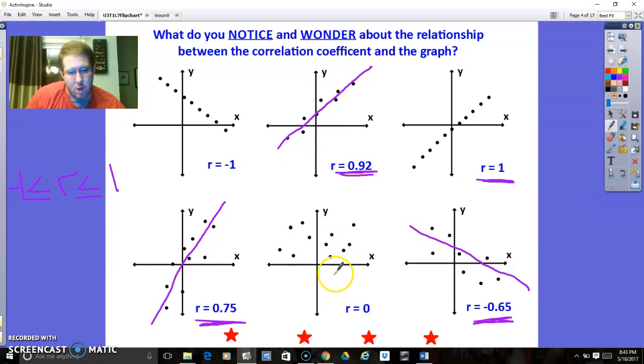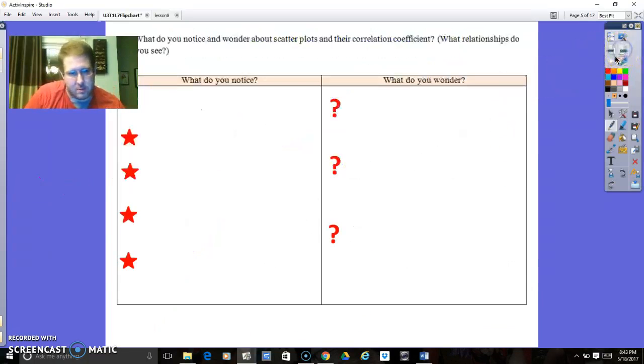That just matters from the correlation coefficient because it tells you the correlations, whether or not one's increasing as the other one's decreasing, which is negative, or if they're both increasing. Increasing and increasing means it's going up. 0 obviously means that it has no correlation whatsoever. So 0.9 would be very strong. 0.8 is a little bit weaker, all the way down to 0, which is absolutely no correlation whatsoever.